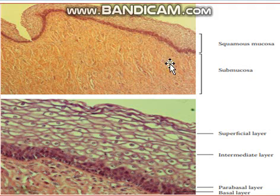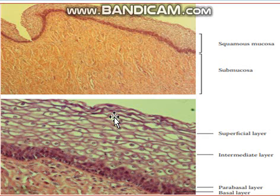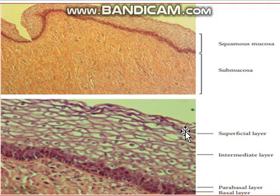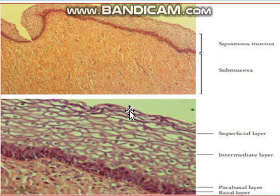As cells approach the uppermost part, they are called epithelial cells forming the superficial layer, also known as the apical layer. The cells are fully differentiated in this layer and have small, dense nuclei. These cells are very loosened up and shed off from this layer to the surface of the vagina.